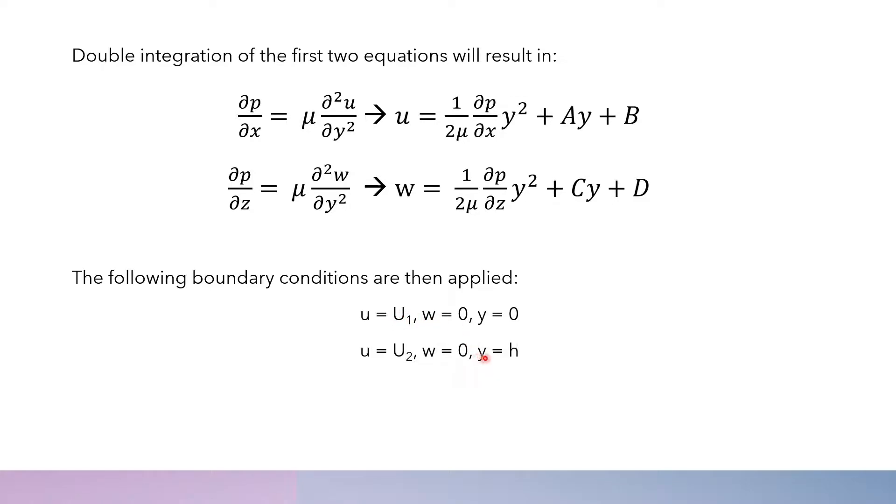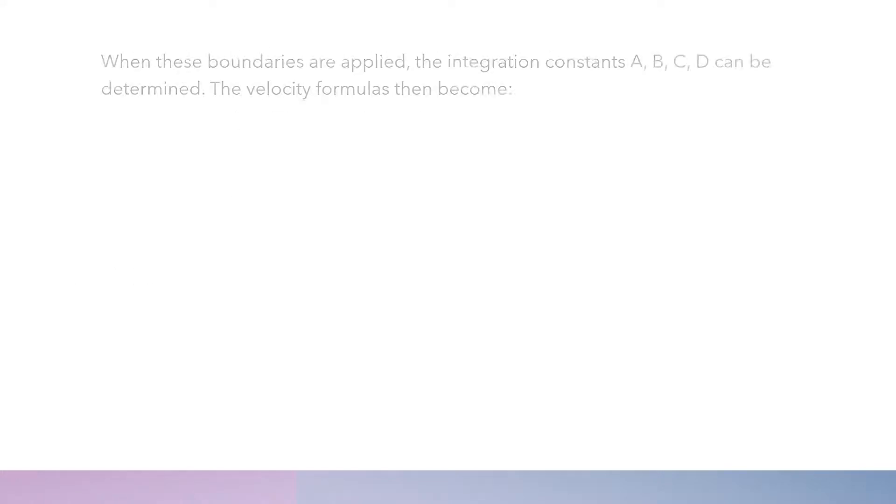When Y equals H, U is equal to U2 and W is also equal to 0. When we apply these boundary conditions, the integration constants A, B, C, and D can be determined, and we can work out the velocities U and W.